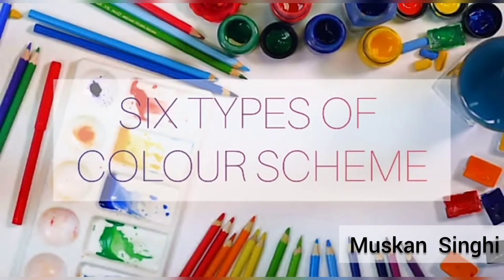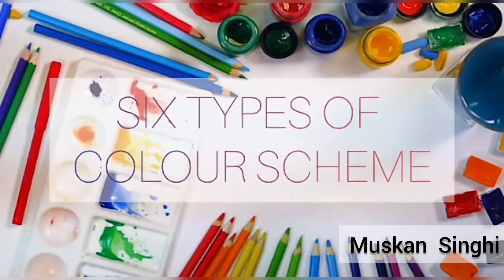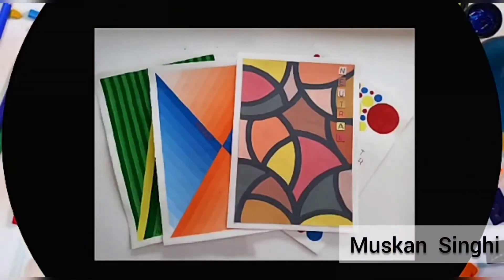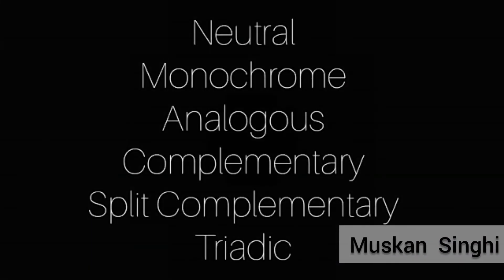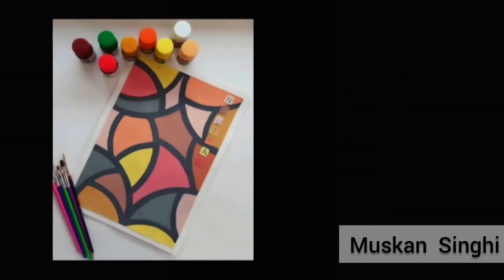Let's study about color schemes. There are six types of color scheme: first, neutral; second, monochrome; third, analogous; fourth, complementary; fifth, split complementary; and sixth, triadic.